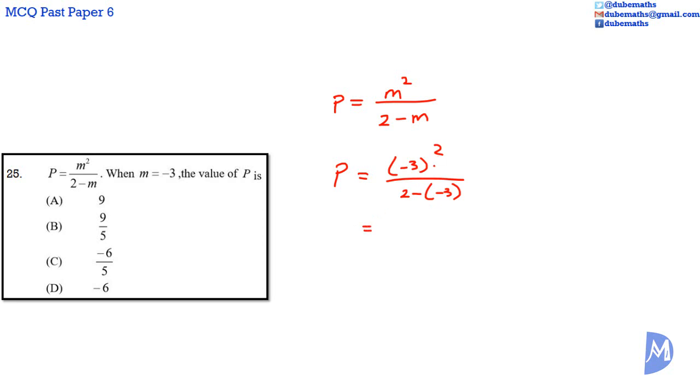Negative 3 squared is the same as negative 3 multiplied by negative 3. 3 multiplied by 3 is equal to 9, and a negative multiplied by a negative is a positive. Positive 9.